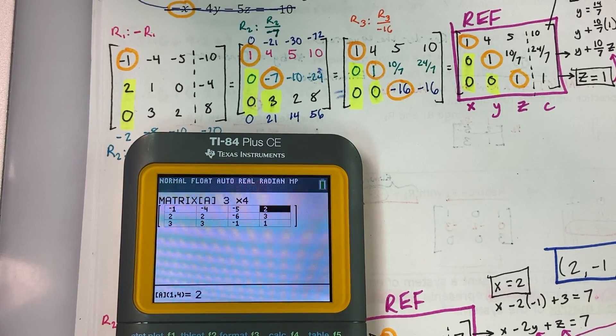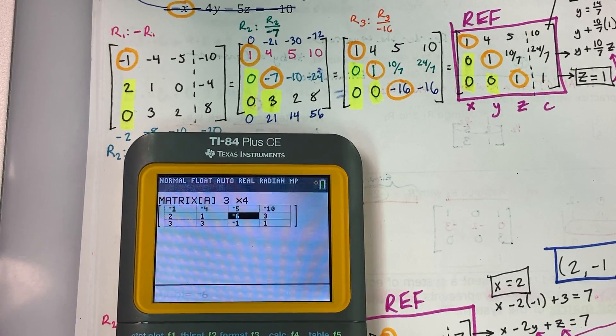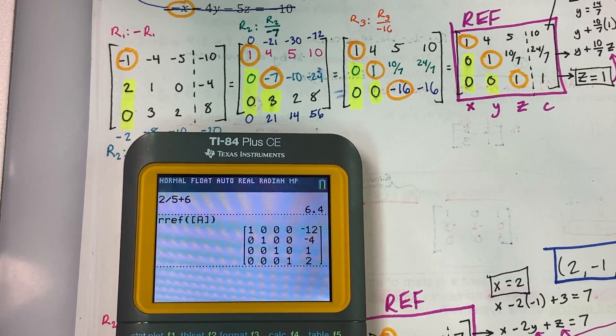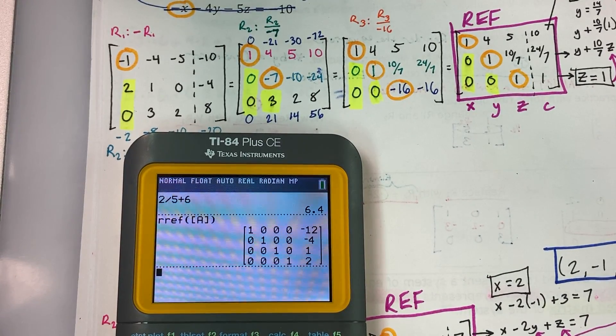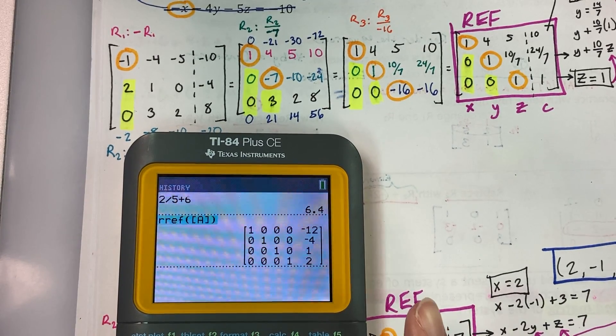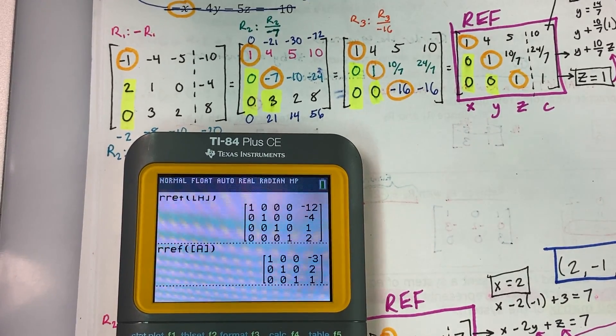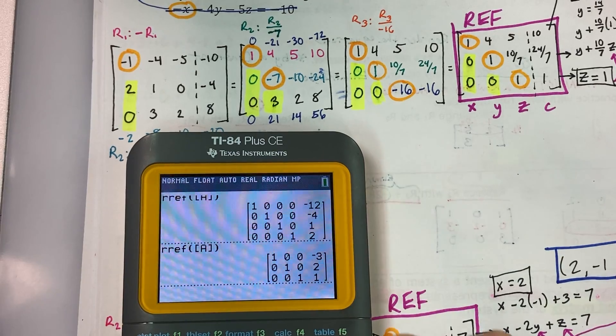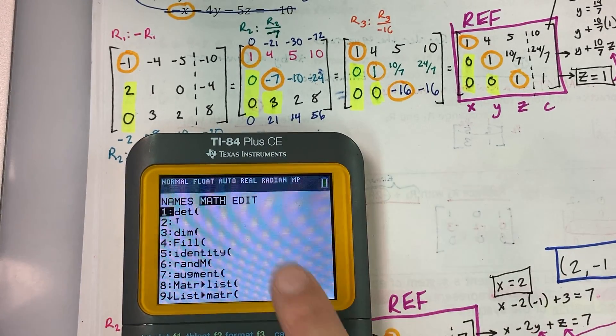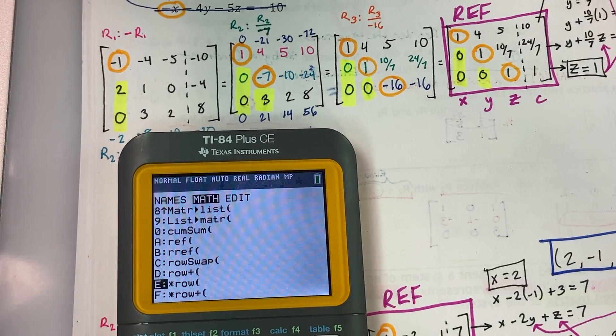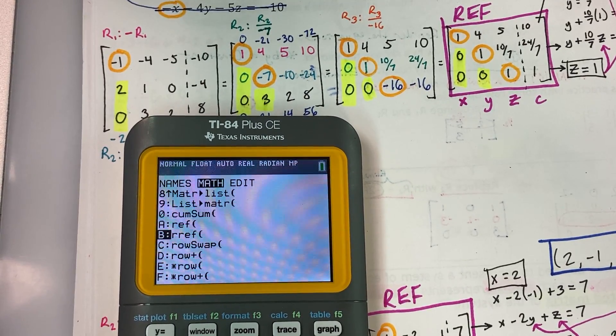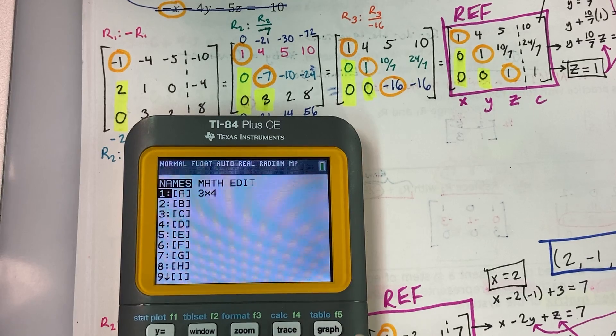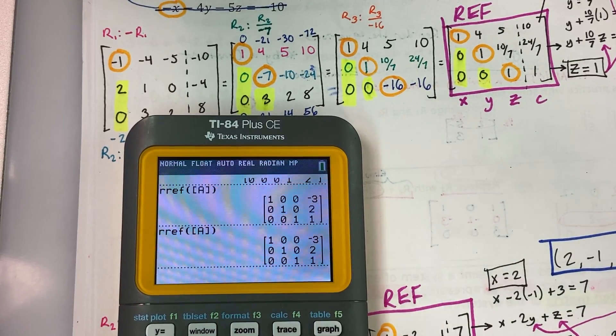And your calculator will still leave some of that data in there from the previous problem. So now I'm going to go through and overwrite it. So negative four, negative five, negative ten, two, one, zero, negative four, zero, three, two, eight. Now I go to second mode to quit and go to my home screen. And notice if I just arrow up, I can select reduce row echelon form again to give me that answer. But the steps that you would need to go through if you didn't have that stored in your calculator are second X to the negative one, arrow over to the math tab. I think arrow up is faster to get to reduce row echelon form. Select that. Then you have to hit second X to the negative one to go back to the matrix. Select matrix A. And that gives you the same thing.